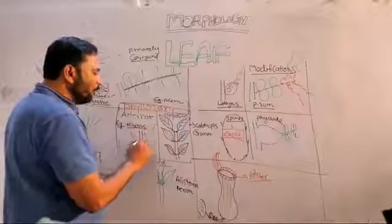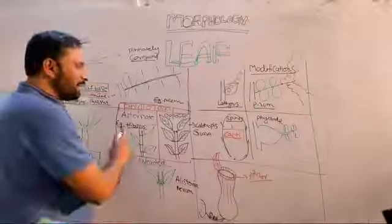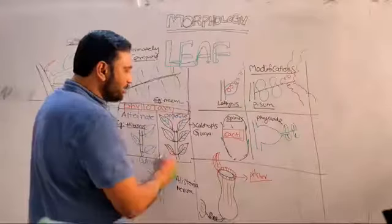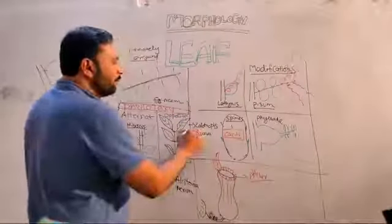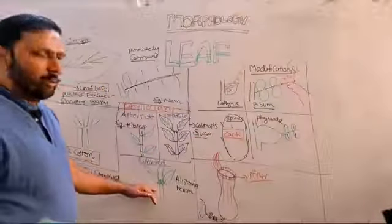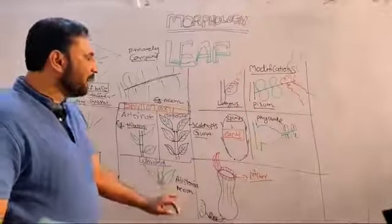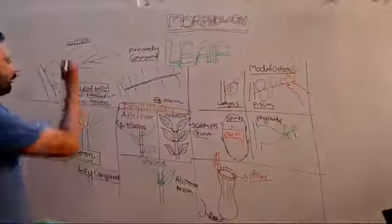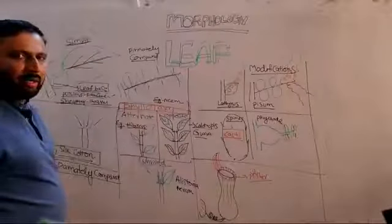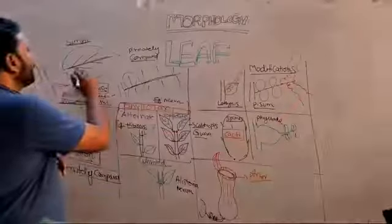In phyllotaxy there are different types: alternate, opposite, and whorled phyllotaxy. In alternate phyllotaxy only one leaf is present at every node — example hibiscus. In opposite phyllotaxy two leaves are present at every node — example Calotropis and guava. In whorled phyllotaxy more than two leaves are present at every node — example Alstonia and Nerium.